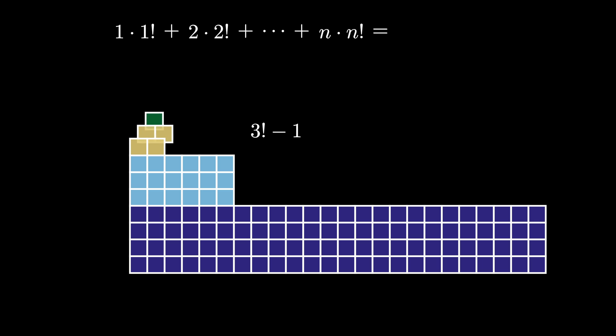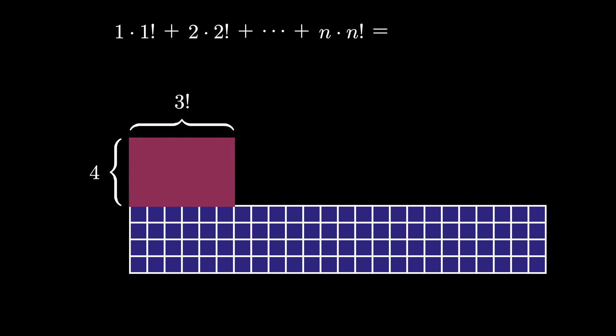But that means that those squares can be shifted down to sit directly on top of the 3 by 3 factorial grid. Now we see that this new grid is a 4 by 3 factorial rectangle, except there's still 1 square missing inside. So this rectangle contains 4 times 3 factorial minus 1, or 4 factorial minus 1 squares. We can shift those down onto the next array.